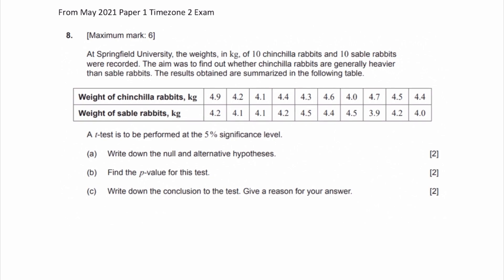This is a question from May 2021 paper one, timezone two exam. At Springfield University, the weights in kilograms of 10 chinchilla rabbits and 10 sable rabbits were recorded. The aim was to find out whether chinchilla rabbits are generally heavier than sable rabbits. The results obtained are summarized in the following table. A two-sample t-test is to be performed at the 5% significance level. Write down the null and alternative hypotheses.